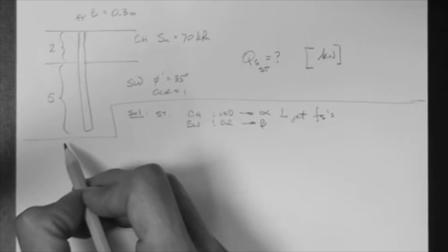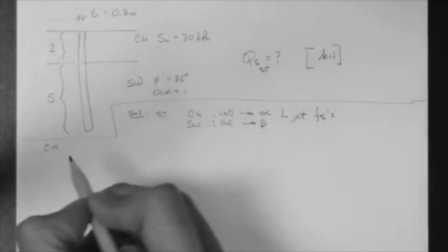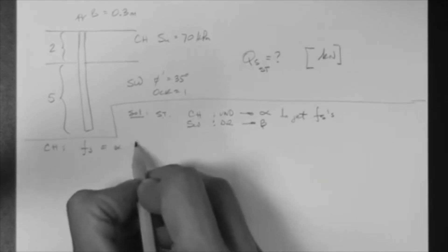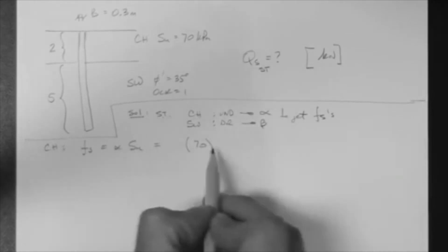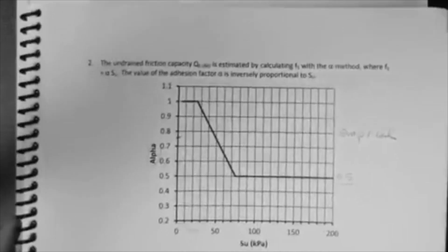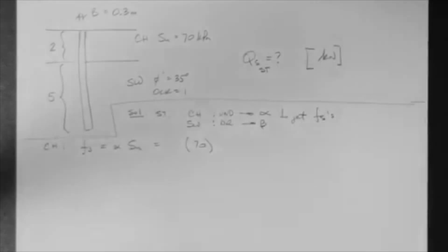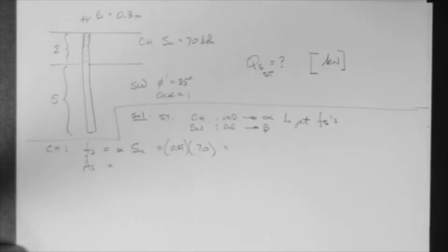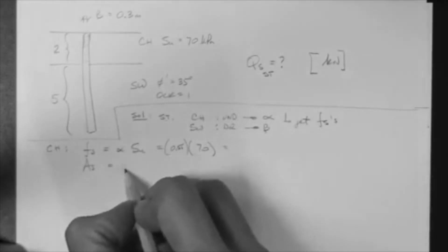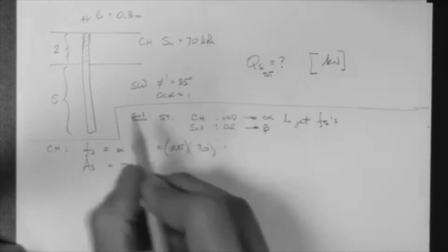So let's get the Fs of the clay. The Fs of the clay is alpha times SU, which is alpha times 70, right? And according to our plot, for 70 kPa, 0.55 is the alpha. So 0.55, that's Fs. Now what's As? The surface area of the segment that touches the clay, right? So that's pi B times the length, which is 2.